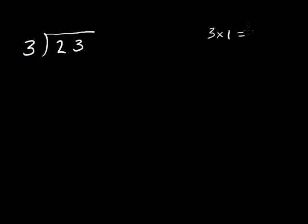3 times 1 is 3, 3 times 2 is 6. Let me just write them all out: 3 times 3 is 9, 12, 15, 18, 21, 24. There's no 23 in the multiples of 3. So how do you do this division problem?